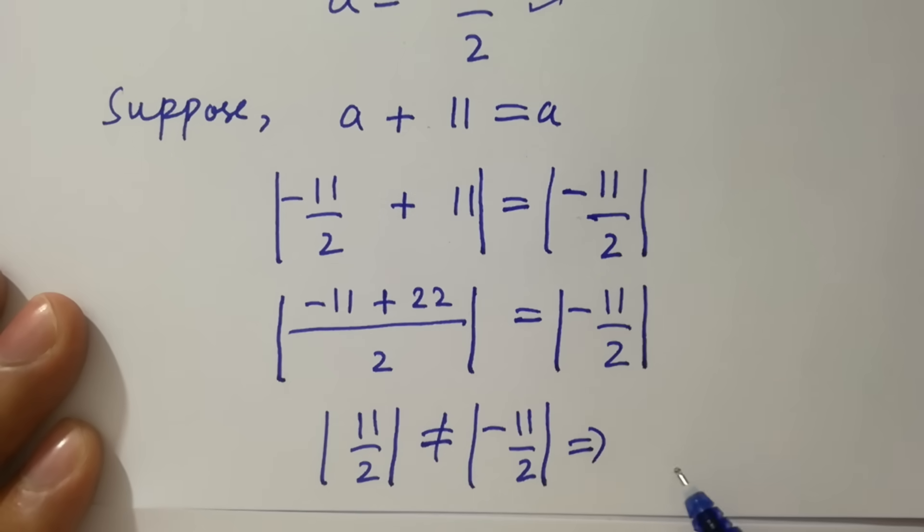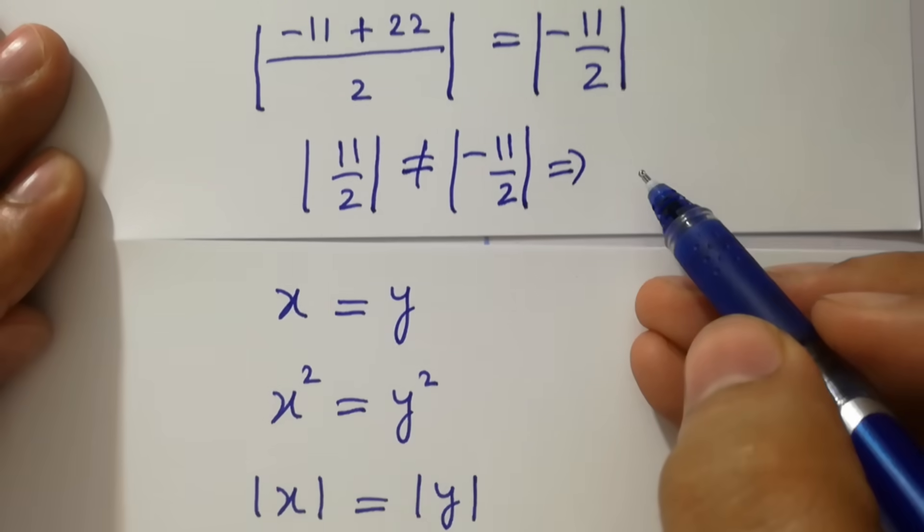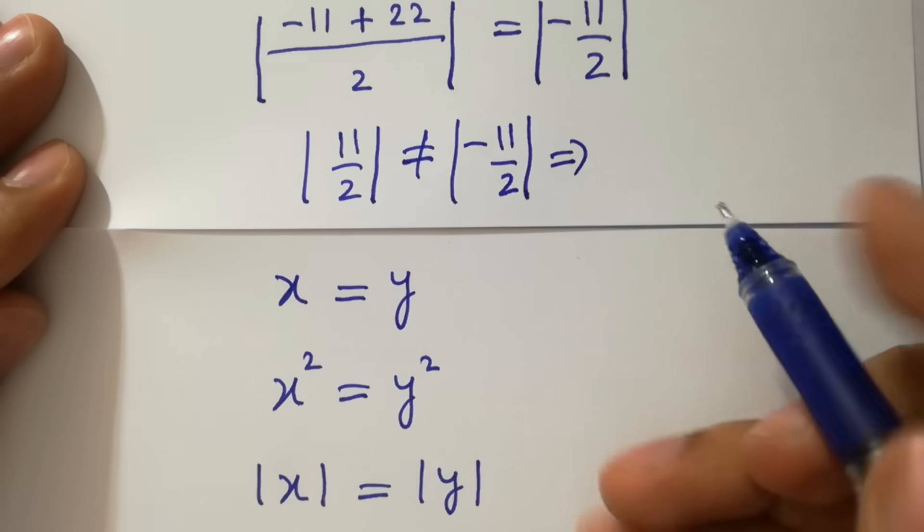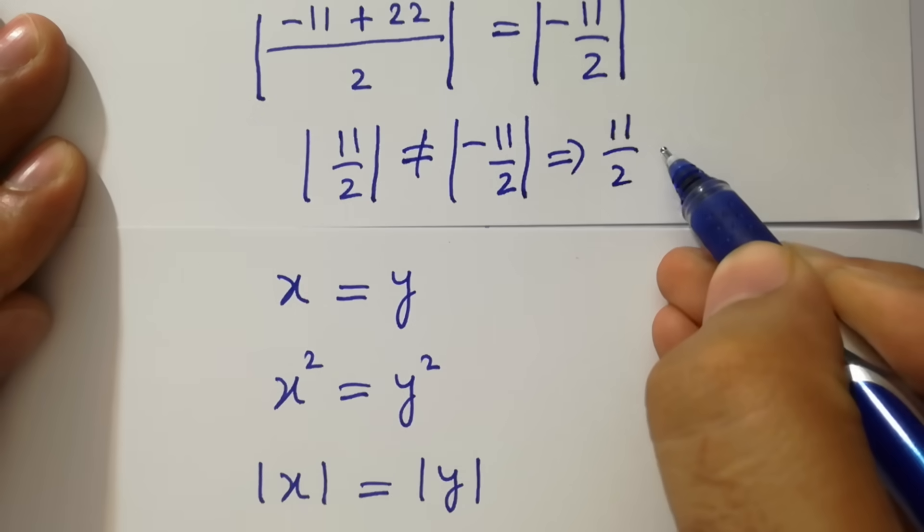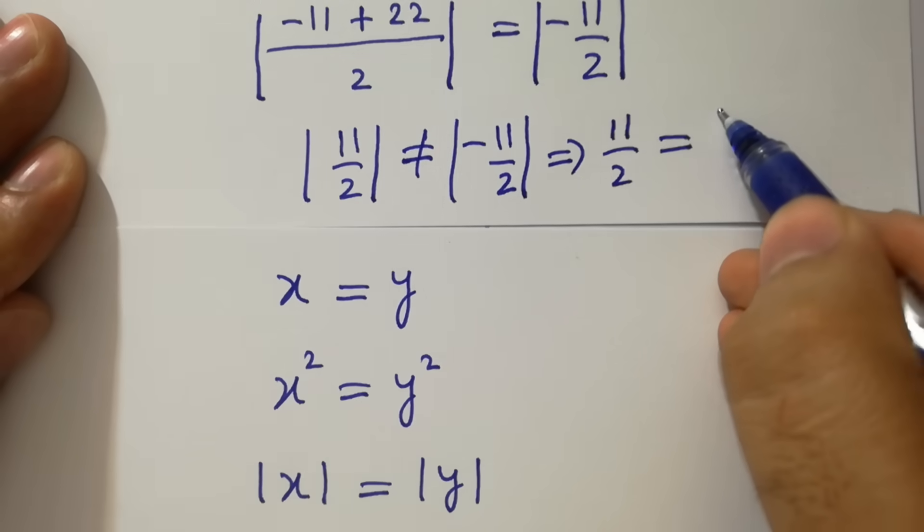By this, we get 11 over 2, which is equal to 11 over 2.